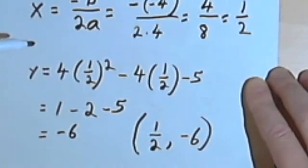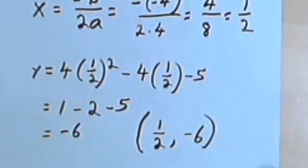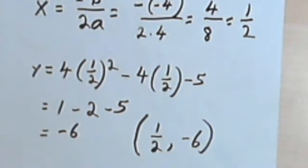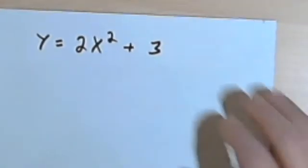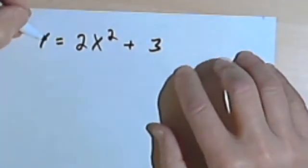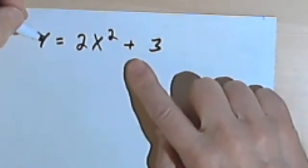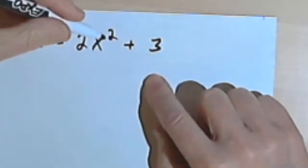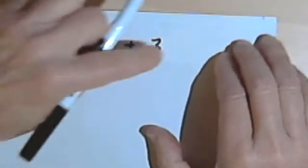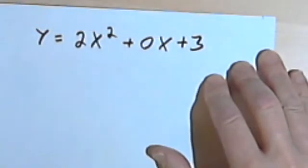So as long as you follow this formula, you should be fine. Now, there's a few examples I want to show you where things are much easier than this even. Let's say I've got an equation without a b-value. I've got y equals 2x squared plus 3. So I'm going to change that to y equals 2x squared plus 0x plus 3.